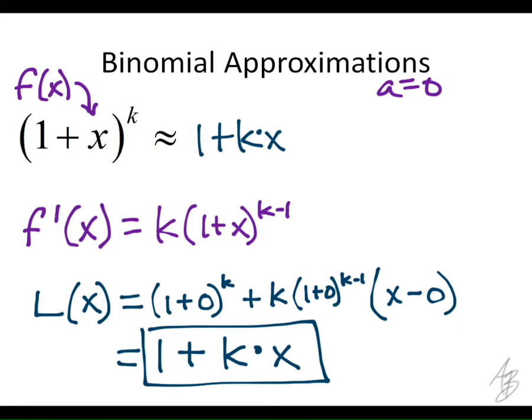It's important to understand that x must be close to 0. If x was like 100, this depends on k too, because k determines what the second derivative is. But for values close to 0, this binomial is going to be really close to 1 + kx - that is, 1 plus whatever that exponent is times this small x value.